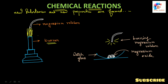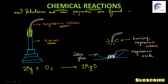Here you can see a burner and a magnesium ribbon. Magnesium ribbon is basically used in the laboratory. If we heat this magnesium ribbon, magnesium oxide will be produced. Magnesium oxide is a white powder.